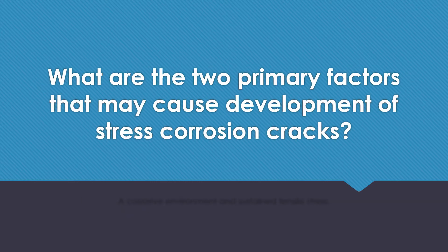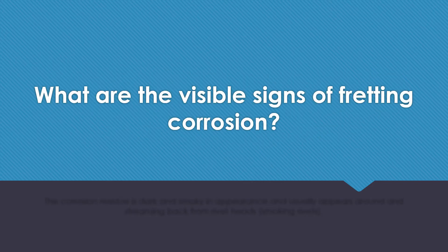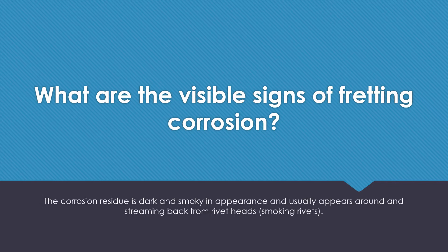What are the two primary factors that may cause development of stress corrosion cracks? A corrosive environment and sustained tensile stress. What are the visible signs of fretting corrosion? The corrosion residue is dark and smoky in appearance and usually appears around or streaming back from rivet heads, also called smoking rivets.